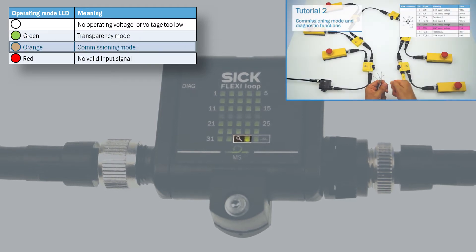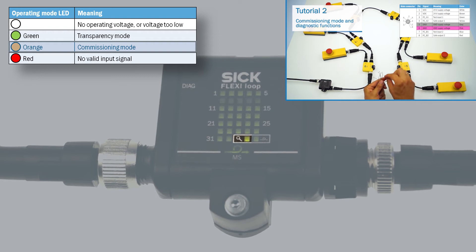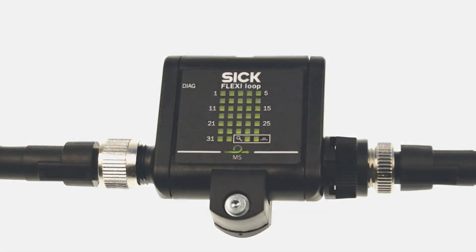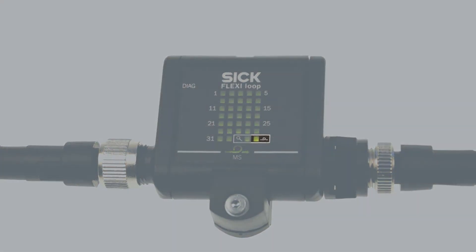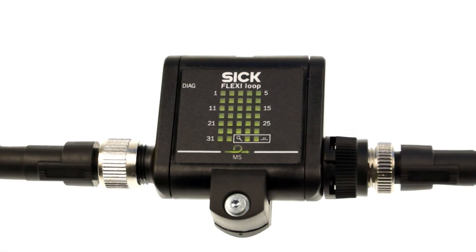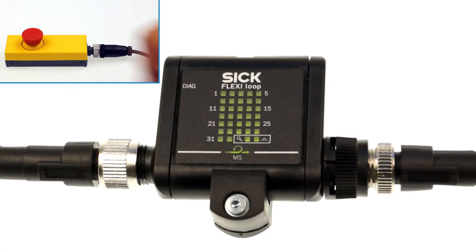The other important operating mode — the commissioning mode — will be explained in more detail in the next video of this tutorial series. And last but not least we have the loop integrity LED. This LED simply tells you if the FlexiLoop communication is running or interrupted. Now let me show you what happens if I actuate a sensor in the FlexiLoop cascade.